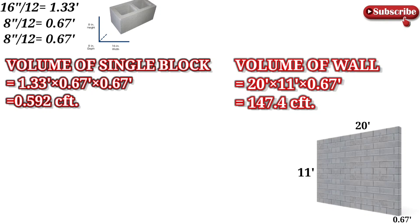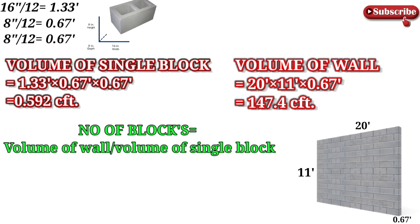Now we can easily find out the number of concrete blocks. Here is a simple formula: number of blocks equals the volume of wall divided by the volume of a single block. We have the volume of wall which is 147.4, and we divide it by the volume of a single block, which is 0.592. This gives 248 blocks.